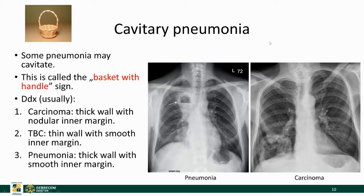Some pneumonias might cavitate, and if we see a cavity, this is called the basket with the handle sign — the full basket has a handle on top and fluid contents below, so due to the fluid and air within the cavity, you see a horizontal interface between them. Several other diseases also cause cavities, such as carcinomas. Here is a large cavity in the lower third of the right lung, but the wall appears nodular and thick, which is typical for carcinomas. Pneumonias have a thick wall with a smooth inner margin, while TB would have a thin wall with smooth inner margins.